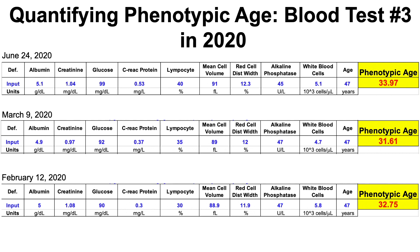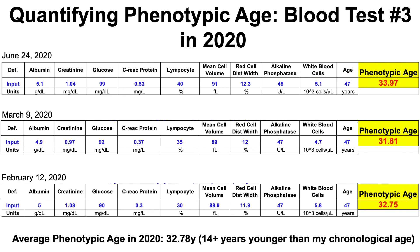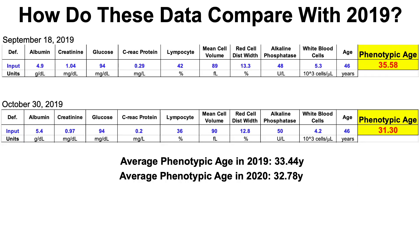Based on these three blood tests so far in 2020, my average phenotypic age is 32.78 years, which is 14-plus years younger than my chronological age.